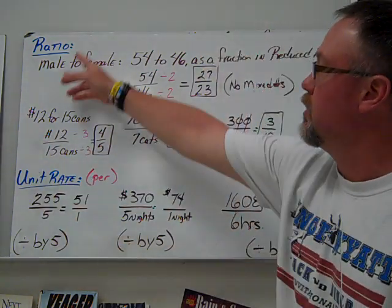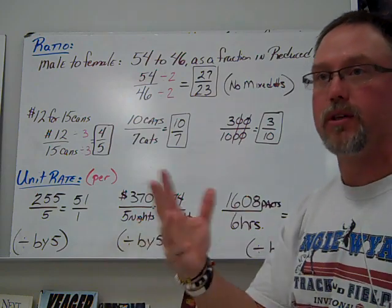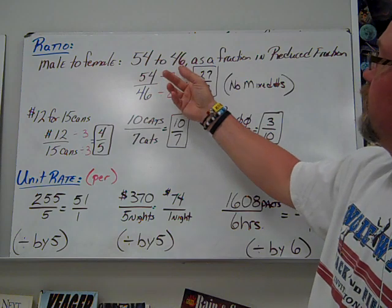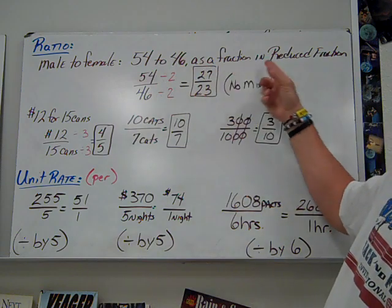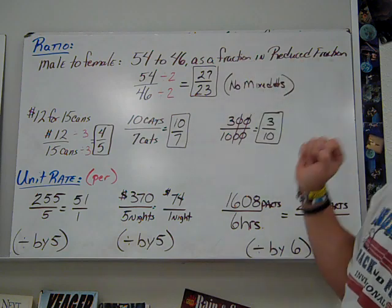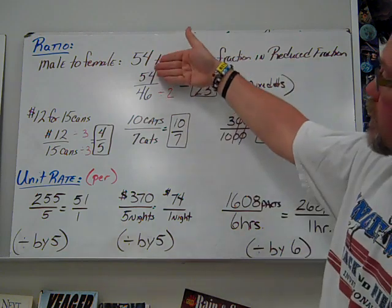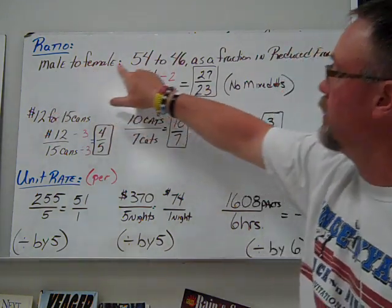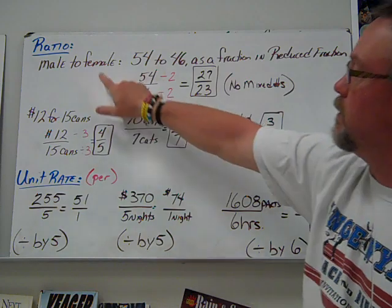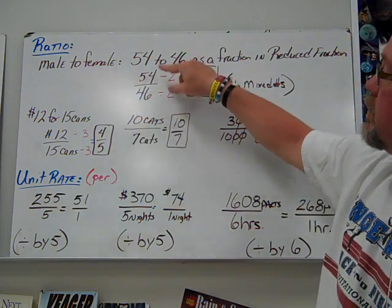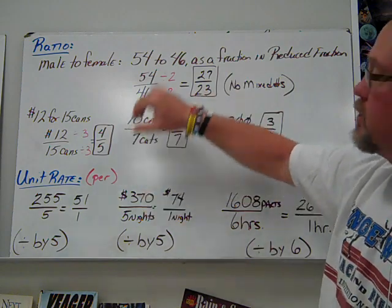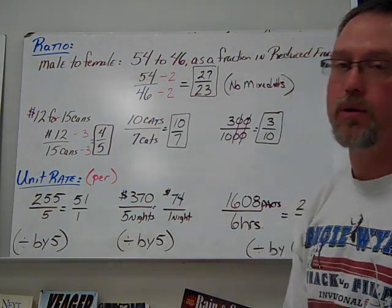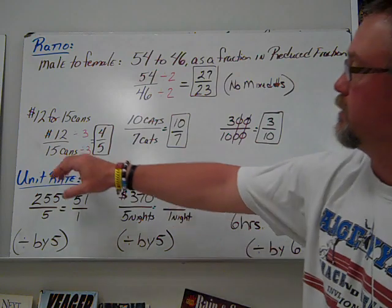We'll jump right in with ratios. If we're going male to female, 54 to 46, they're going to ask you to write it as a fraction in reduced form. We set up 54 male to 46 female. Generally, whatever comes first in the sentence is the first number that goes on top, second at the bottom. We reduce this, divide by 2, and get 27 over 23. We do not want to get into mixed numbers on this. Leave them as improper.